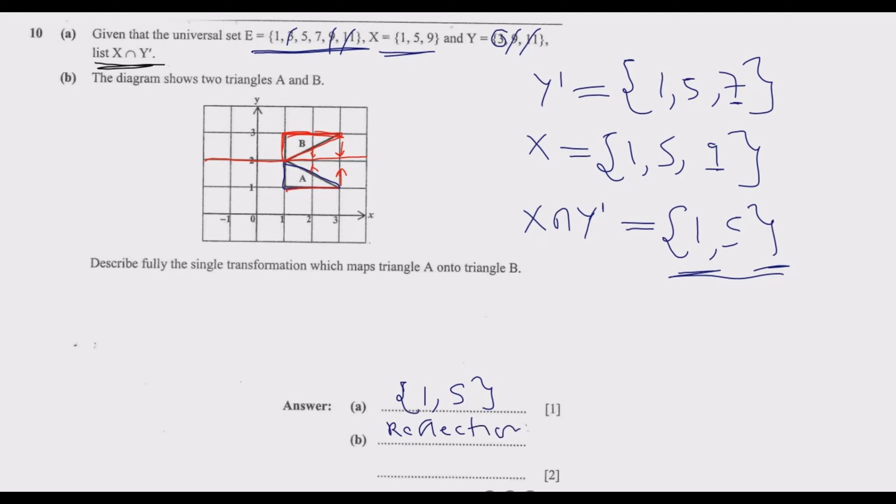Reflection needs to be described with the mirror line. The mirror line is y equals 2. So it's a reflection with mirror line y equals 2. Basically, you would have described the transformation fully. This is how you answer question 10.